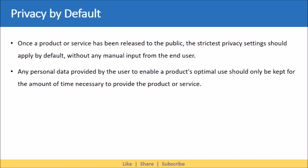If more information than necessary to provide the service is disclosed, then Privacy by Default has been breached. For example, if you sign up for a social networking site, all privacy settings to your personal information should be applied by default, without you asking for it or enabling it.